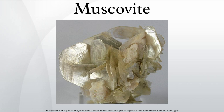Muscovite is the most common mica, found in granites, pegmatites, gneisses, and schists, and as a contact metamorphic rock or as a secondary mineral resulting from the alteration of topaz, feldspar, kyanite, etc. In pegmatites, it is often found in immense sheets that are commercially valuable.